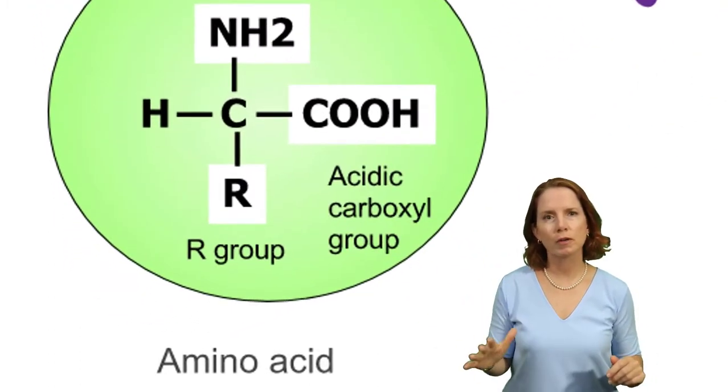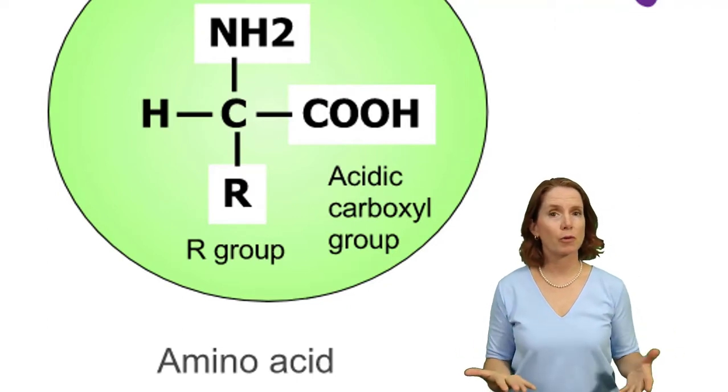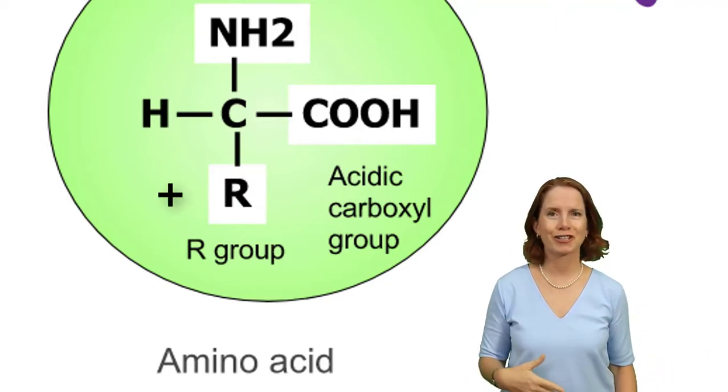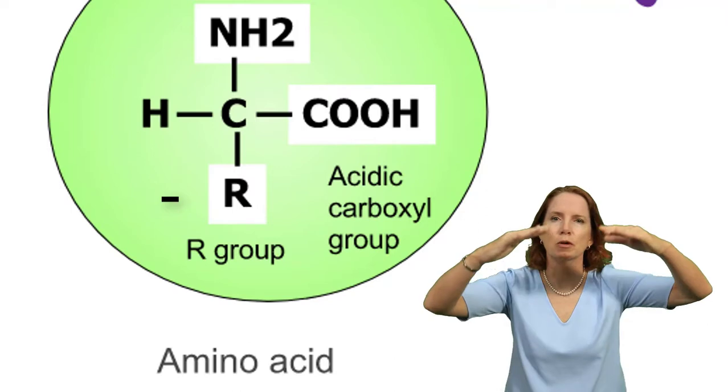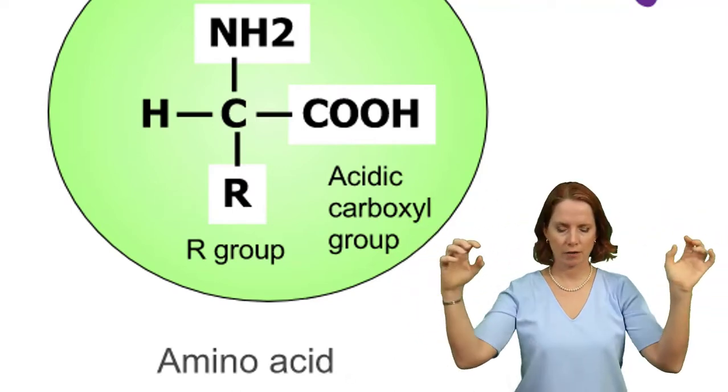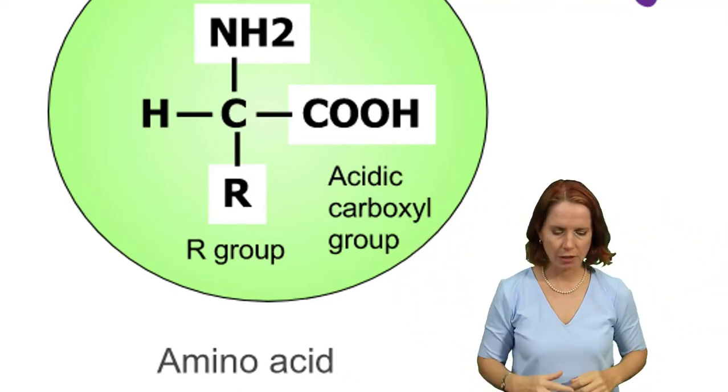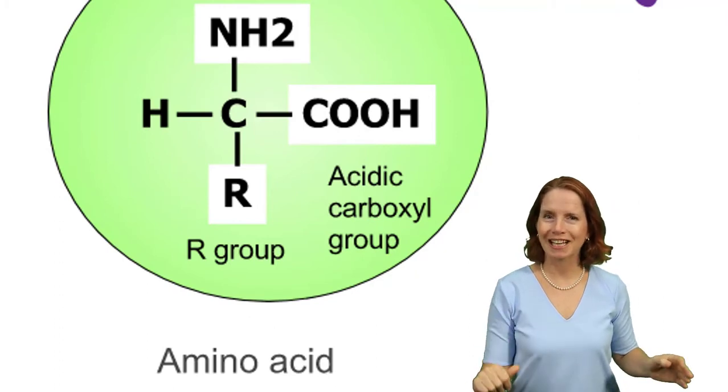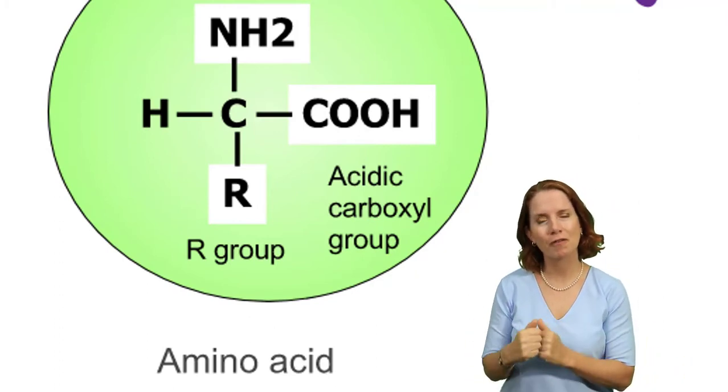And then what makes each amino acid unique is this R group. So the R group, you can think of as the variable group. Some of those R groups have a positive charge. Others have a negative charge. Some of them are sort of big and bulky. Others are very small and compact. Some of them love water, they are hydrophilic. Others hate water, they are hydrophobic.